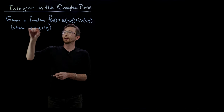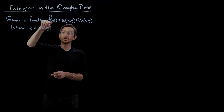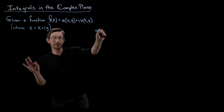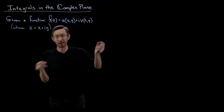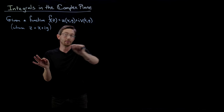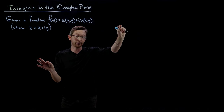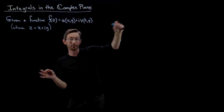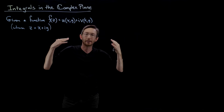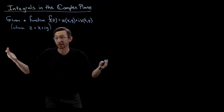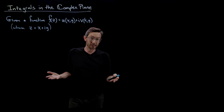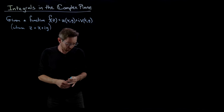We're going to compute the integral of this function f over paths in the complex plane — maybe closed circles, or a path from point z₀ to z₁. And we're going to see when that integral depends on the path I take, and when those integrals equal zero.